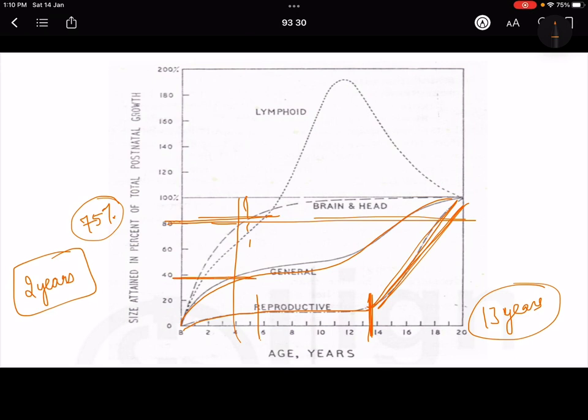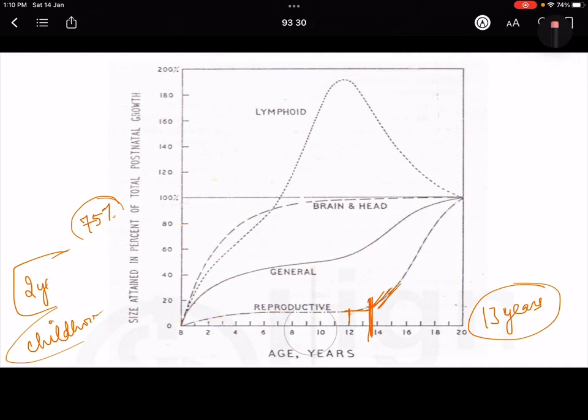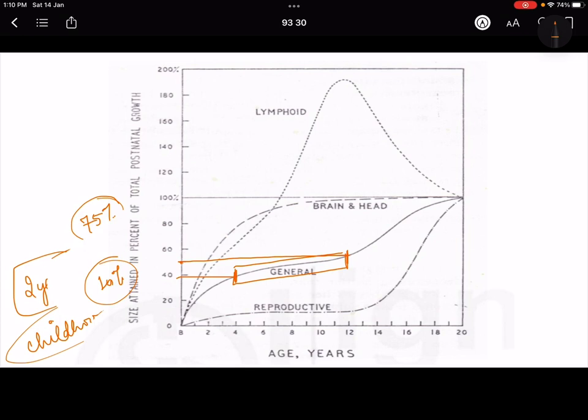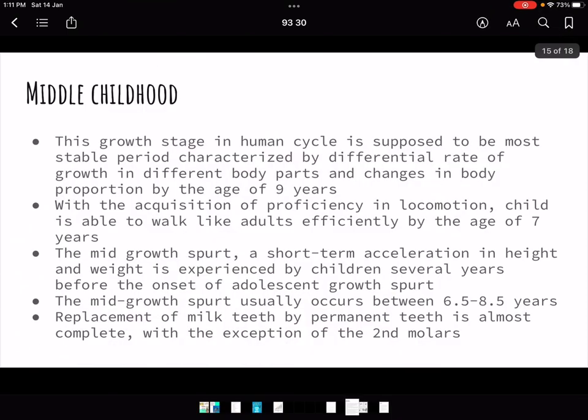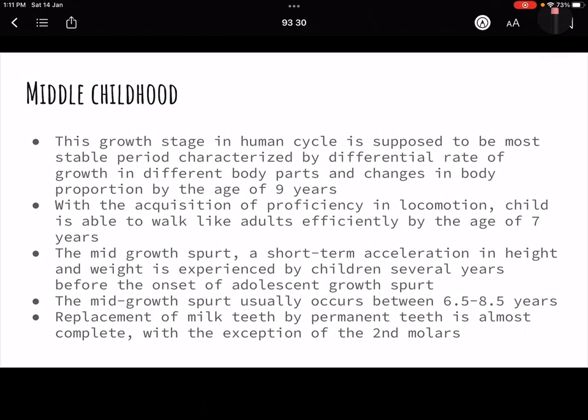General body growth also happens like that only. 20, 30, 40% growth happens by the year four years, then it becomes very slow till 12 years. So childhood, we had talked about it yesterday, that in childhood that stagnation, that development and growth becomes very slow. You can see that by four years to 12 years, that growth has only been this much. It has only been 40 to 50%, so only 10% growth and development has happened in so many years, and after that it takes a jump. Similarly, the lymph. You can just have a little bit idea about this picture also.